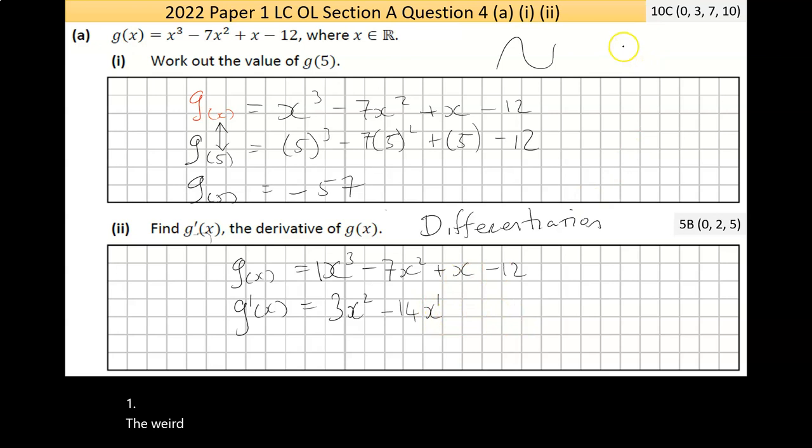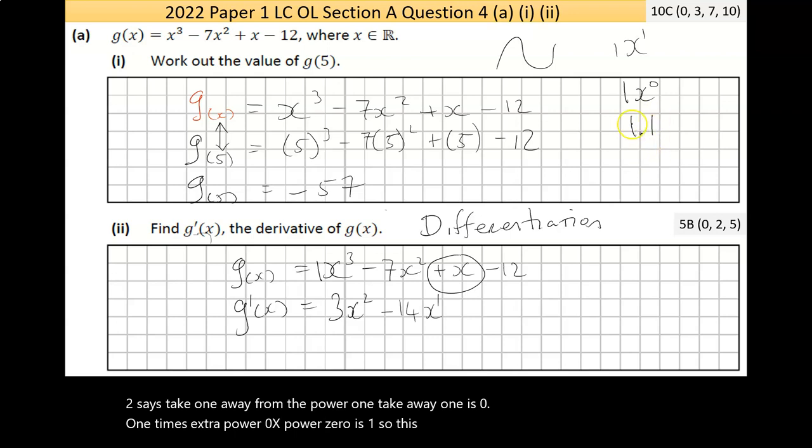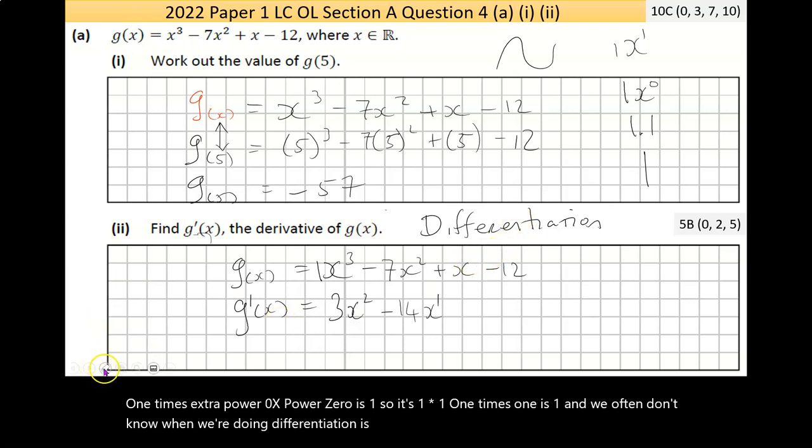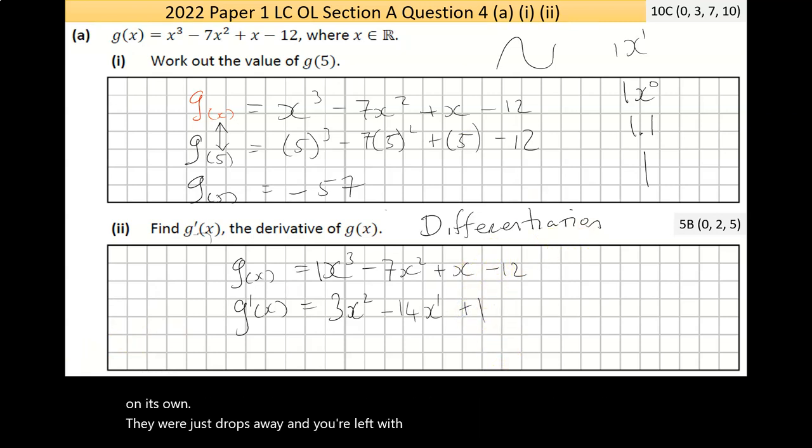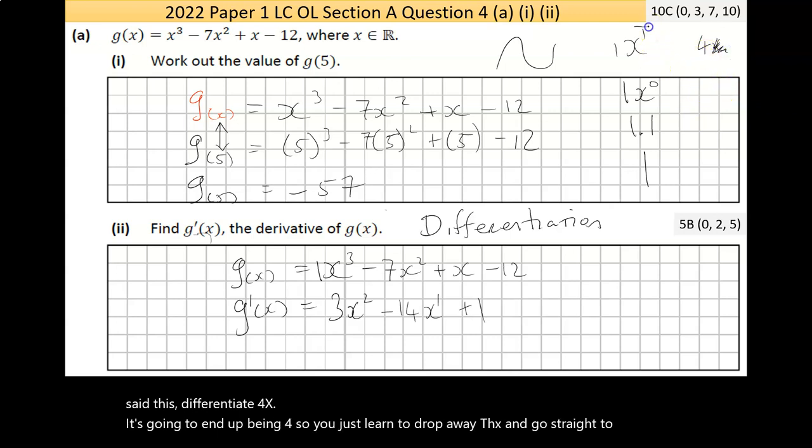And step two of differentiation says you should take away one from the power. So three take away one is two. And that's called the power rule of differentiation. We can do the same thing here in the second term. Power by number in front, two times negative seven is negative 14. And then we take one away from the power. Two take away one is one. We don't actually need to write that one, because by definition, if there's no power there, it is one.